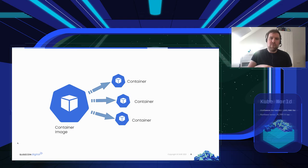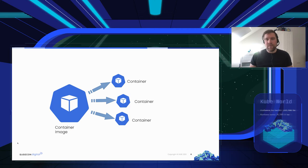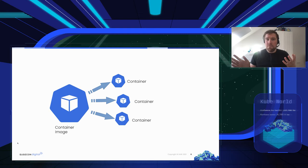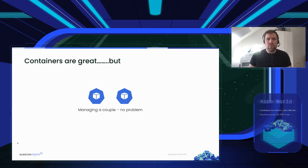The process — in our example the Apache process — runs natively on the system with no virtualization involved. Through Linux kernel features, the process doesn't see other processes on the system and has no way to directly interact with them. Every container has its own file system and no direct access to the host file system. Network-wise containers are also isolated, and when you stop the container the whole thing is deleted, leaving your system clean.